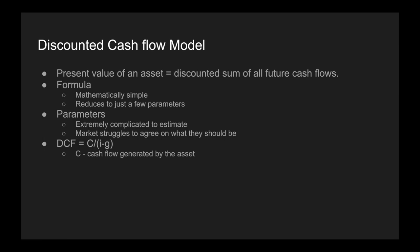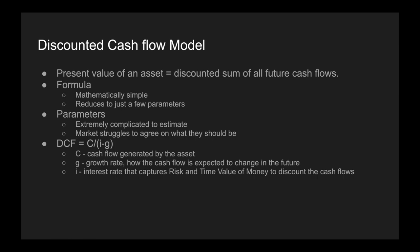The three parameters are: C — the cash flow generated by the asset; G — the growth rate, which is how the cash flow is expected to change in the future; and I — the interest rate that captures risk and the time value of money, used to discount the cash flows. An asset's value is high when cash flows and growth rates are high and the interest rate is low. Value is low when cash flows and growth are low and the interest rate is high.